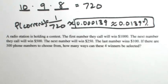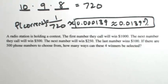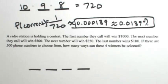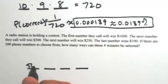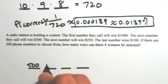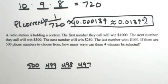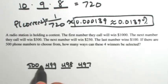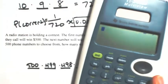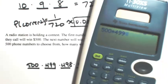Let's look at one more example where you use just a few of the things given. A radio station is holding a contest: the first number called wins $1,000, the next wins $500, the next $250, and the next $100 — four total winners. With 500 phone numbers to choose from, how many ways can these four winners be selected? For the first winner there are 500 possibilities; they won't be called again, so the next is 499, then 498, then 497. By the Fundamental Theorem of Counting, we multiply these together. This is not 500 factorial because we're not using all 500.